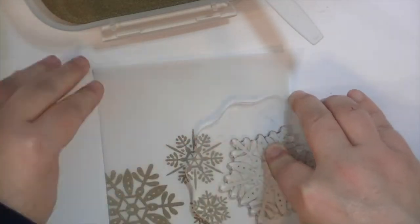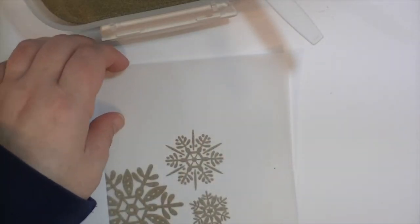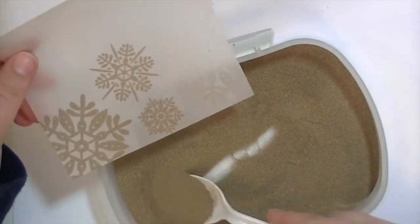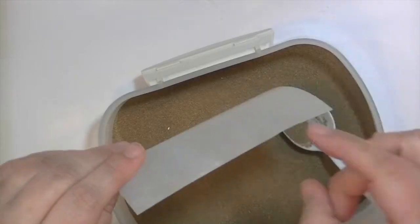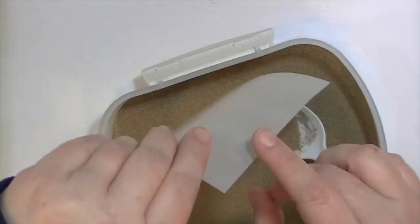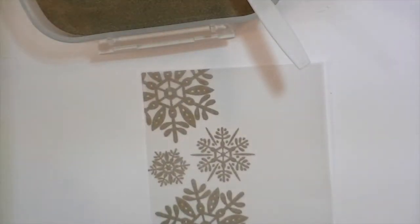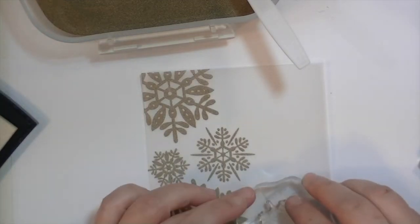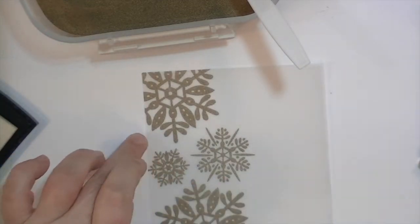And some extra things that you can kind of do with or without are the embossing powder tool. You could also use a dryer sheet. It just makes sure there's no static, especially on the vellum, because if there's any kind of static electricity, the embossing powder will stick to it. So it'll be all over the place.